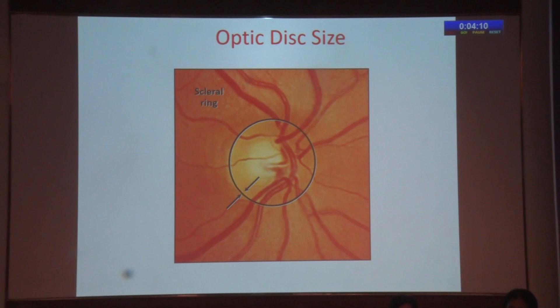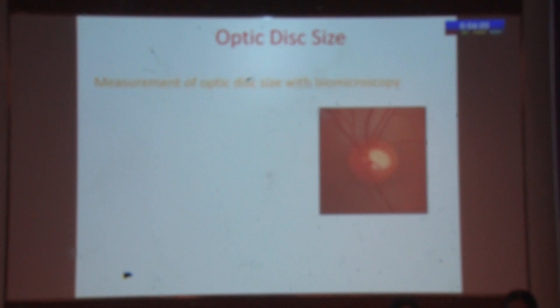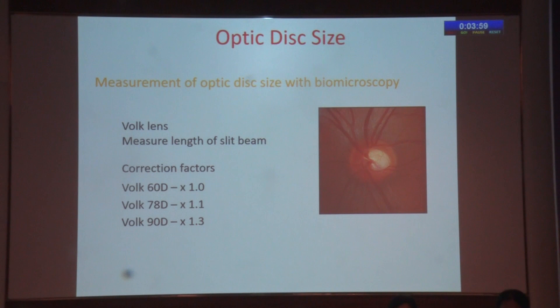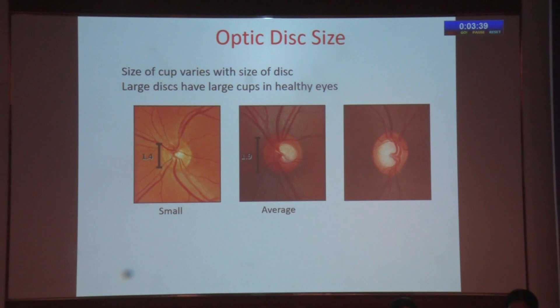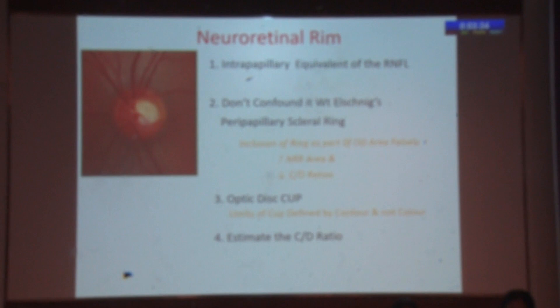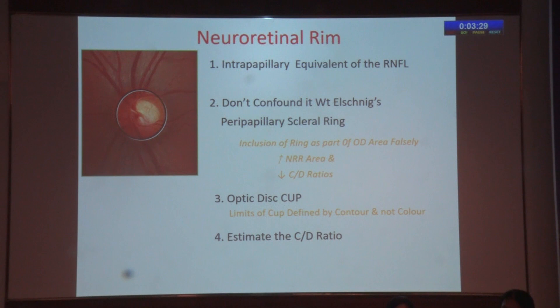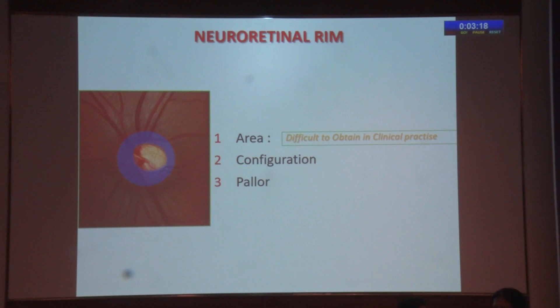The scleral ring defines the vertical and horizontal disc diameters. Measurements vary according to the lens used at the slit lamp — the high plus lenses and manufacturer's constants — giving average vertical and horizontal diameters. The size of the cup varies with the size of the disc. Large discs have large cups where you diagnose glaucoma more often than in small discs with small cups, where you might actually miss the diagnosis. The neuroretinal rim is what we are really interested in — like a donut where we're interested in the chocolate, not the hole in the center. The area, configuration, and pallor of the neuroretinal rim indicate loss of rim tissue, which occurs in glaucoma.